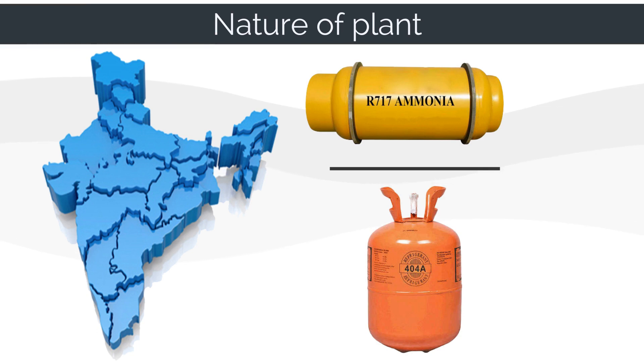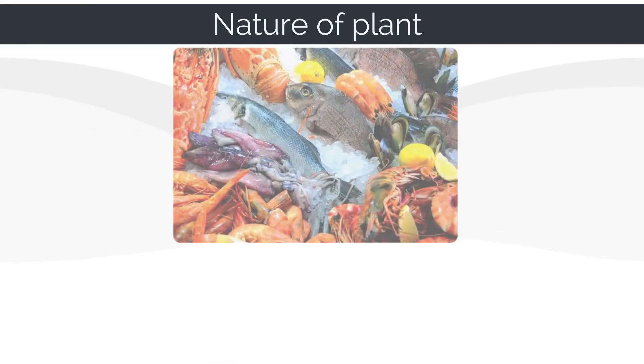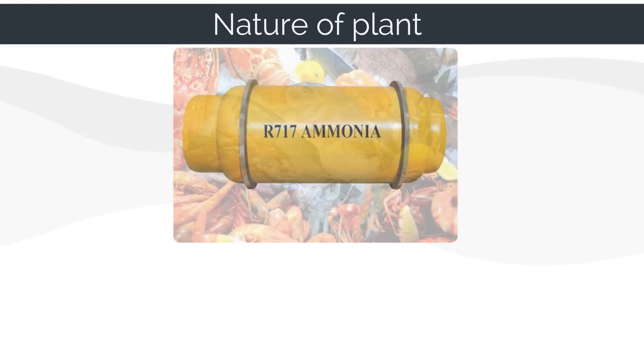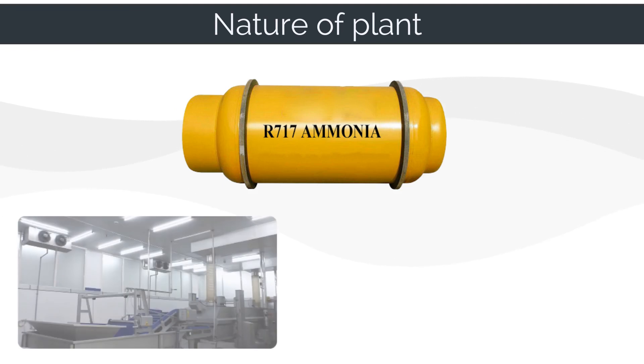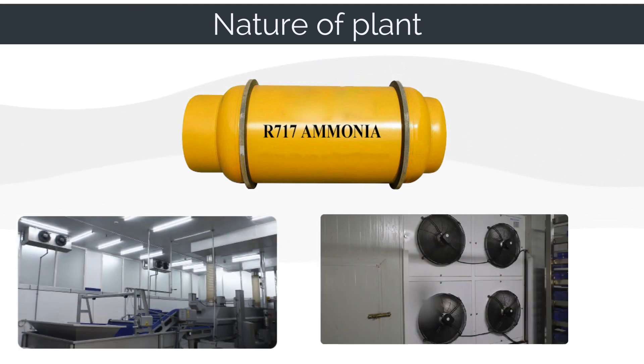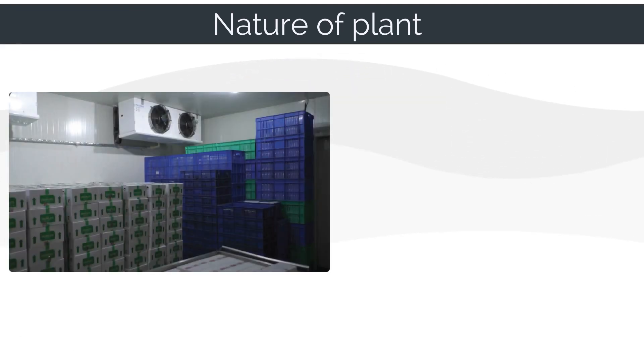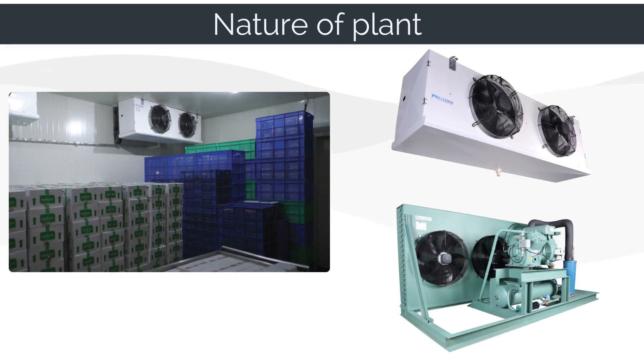There are some regions though that have mastered the art of dividing these plants into two technologies. For example, in many seafood processing plants in Cochin, they use ammonia system for all the processing and freezing cooling requirements except freezer room. The freezer room's refrigeration systems are fully automatic, and the ammonia system is manual.